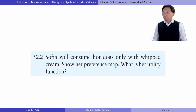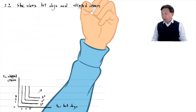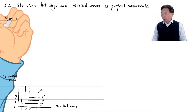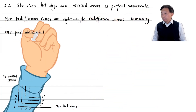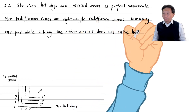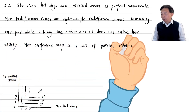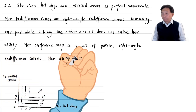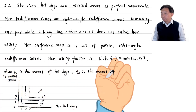Let's solve exercise 2.2. Sophia will consume hot dogs only with whipped cream. Show her preference map. What is her utility function? She views hot dogs and whipped cream as perfect complements. Her indifference curves are right angle indifference curves. Increasing one good while holding the other constant does not raise her utility. Her preference map is a set of parallel right angle indifference curves. Her utility function is as follows, where Q1 is the amount of hot dogs and Q2 is the amount of whipped cream.